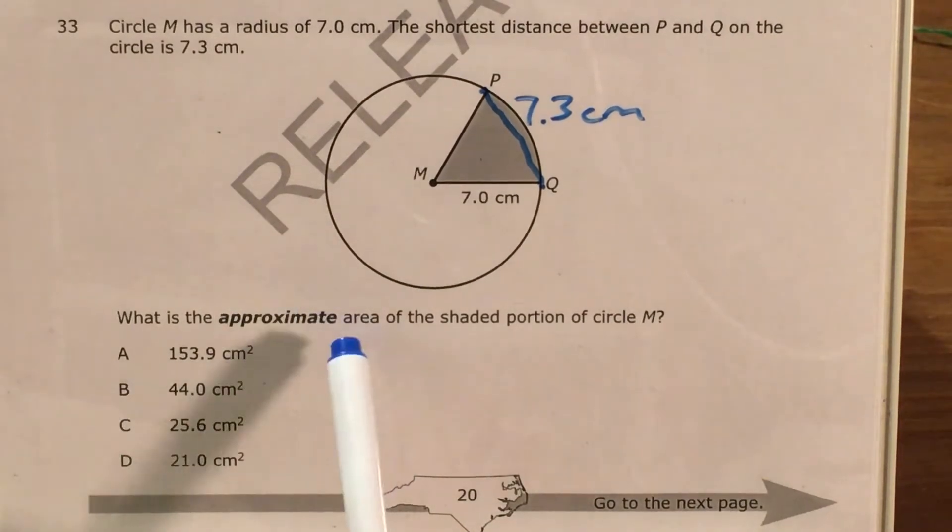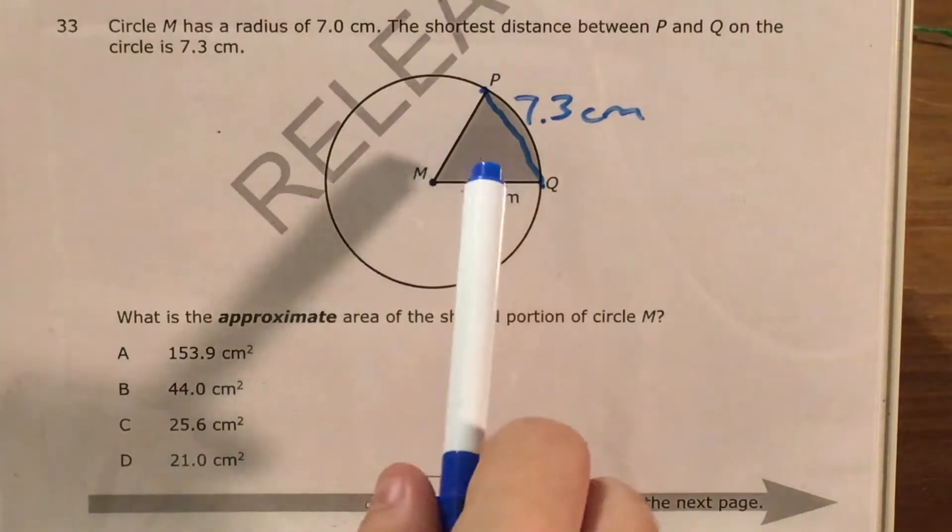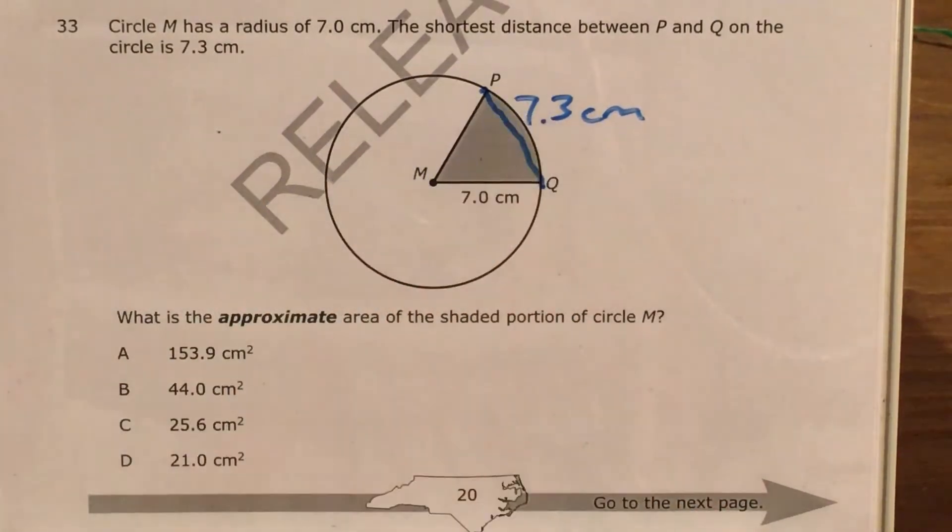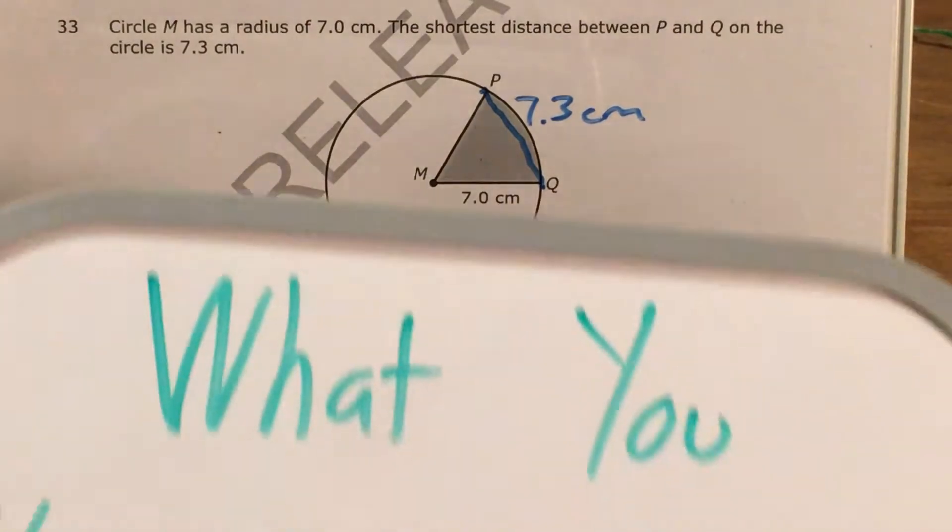We're trying to figure out the area of this shaded portion here that goes out to the same two points, P and Q, that make this little line segment, also known as a chord, if you don't know that already.